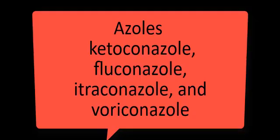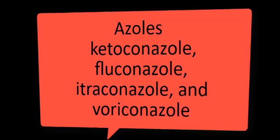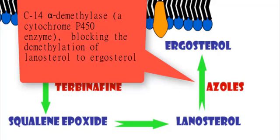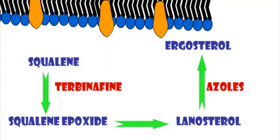The azoles include ketoconazole, fluconazole, itraconazole, and voriconazole. Azoles interfere with fungal cell membrane permeability by inhibiting the synthesis of ergosterol. They inhibit C14-alpha-demethylase, a cytochrome P450 enzyme, thereby blocking the demethylation of lanosterol to ergosterol, the principal sterol of fungal membranes. This inhibition disrupts membrane structure and function, which then inhibits fungal cell growth.